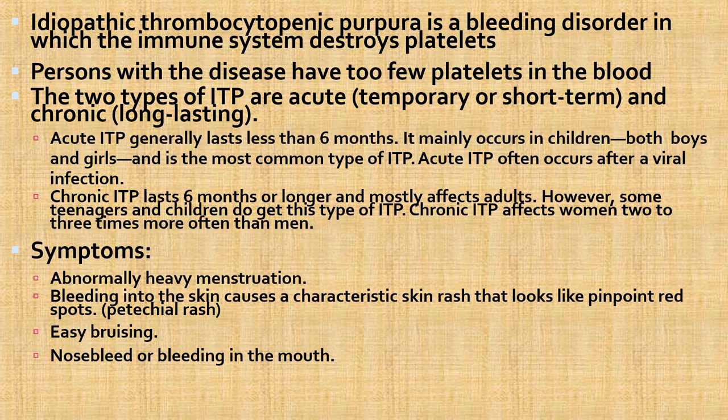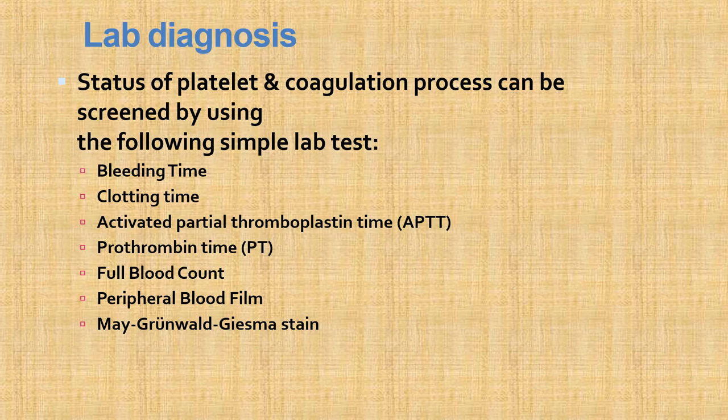The two types of ITP are acute and chronic. Acute ITP lasts less than six months, mainly occurs in children, often after a viral infection. Chronic ITP lasts six months or longer, mostly affects adults but some teenagers and children also get this type, affecting women two to three times more than men. Symptoms include abnormal heavy menstruation, bleeding into the skin, characteristic pinpoint red spots (petechiae), easy bruising, nose bleeds, and bleeding in the mouth.